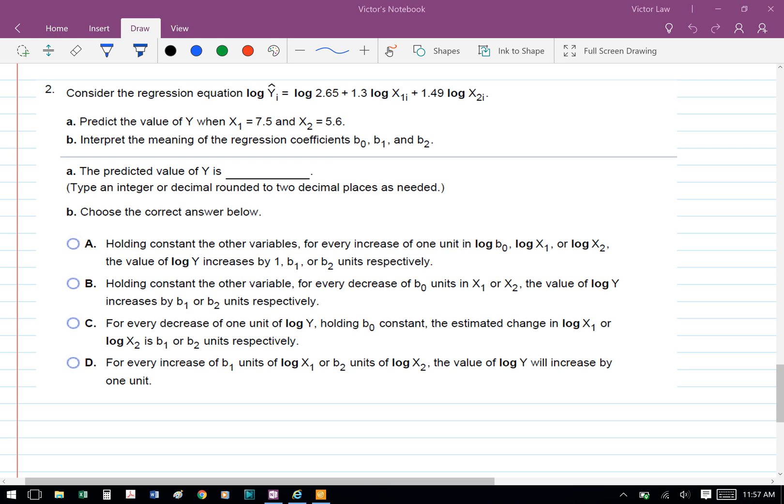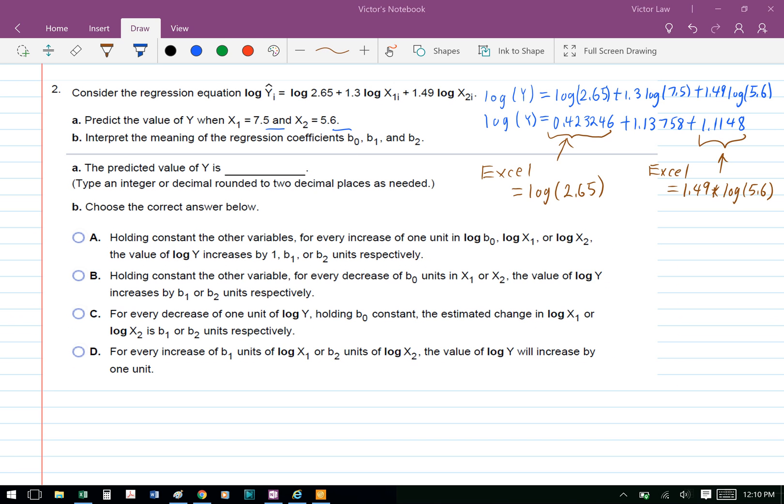Part A: predict the value of y when x₁ equals 7.5 and x₂ equals 5.6. We're going to substitute these values, so our equation becomes log y equals log 2.65 plus 1.3 log 7.5 plus 1.49 times log 5.6.